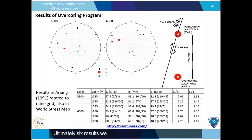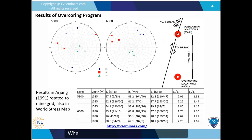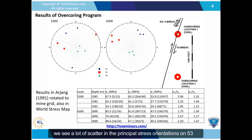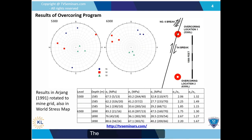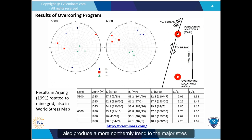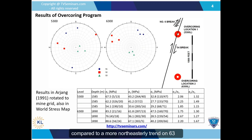Ultimately six results were obtained from the over-coring program, with three on each level. When we look at the measurements from each level, we see a lot of scatter in the principal stress orientations on 5,300. The bearings of the major stress vary by over 40 degrees compared to around 20 degrees on the 6,300 level. The average results from 5,300 also produce a more northerly trend to the major stress compared to a more northeasterly trend on 6,300.